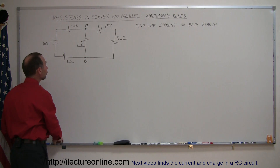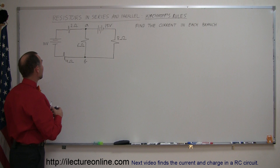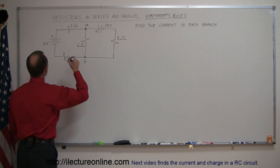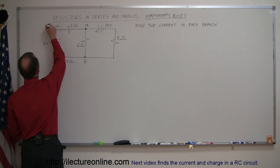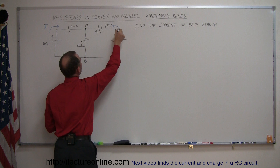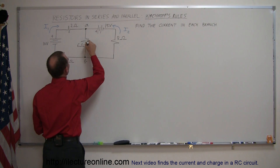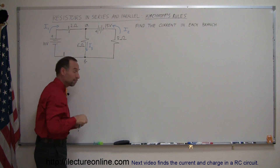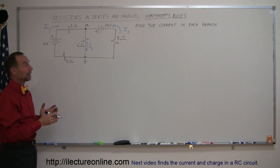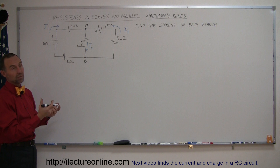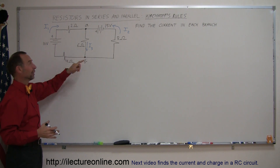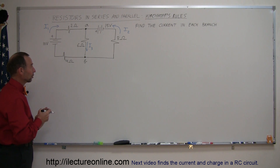We're supposed to find the current in each of the three branches. What you want to do is assume which direction the current will go. Since this is the positive end of this battery and that's the positive end of this battery, you can probably assume that current will flow this way in this branch — call that I1 — in this direction in this branch — call that I2 — and this way in the third branch, call that I3. If you draw the arrows in the wrong direction, the corresponding answer will be negative, which means you should have drawn the arrow in the opposite direction. A negative answer still gives you the right answer, so you don't need to worry about that.